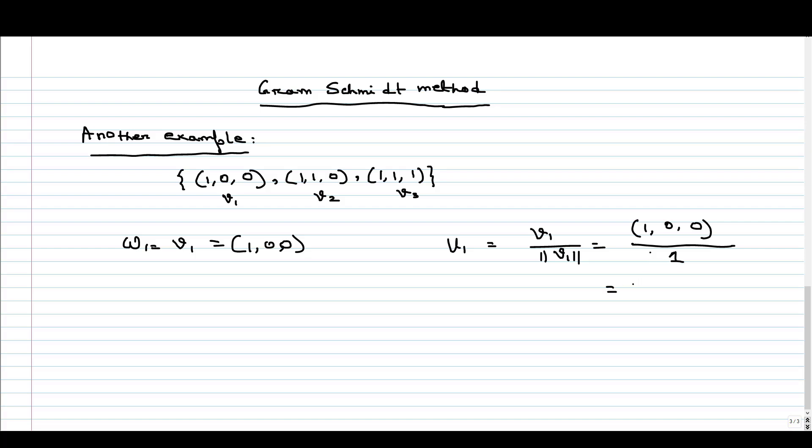If we calculate, you can see it is nothing but 1. So our first vector is basically the same. So our U1 is (1, 0, 0).